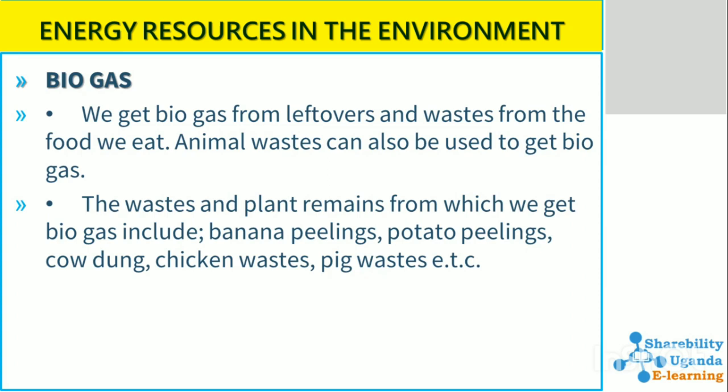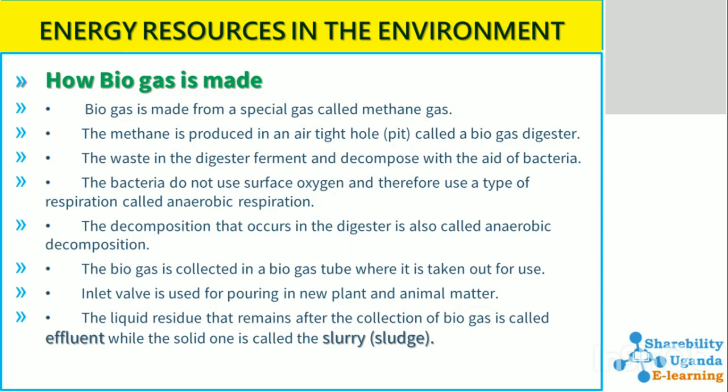Biogas is obtained from leftovers and food wastes, as well as animal wastes. Sources from which biogas is made include banana peelings, potato peelings, cow dung, chicken wastes, and pig wastes. Biogas is made from a special gas called methane gas, which is produced in an airtight hole called a biogas digester.